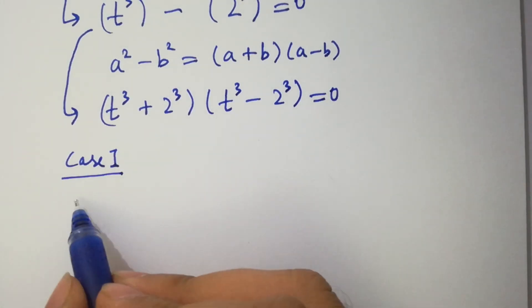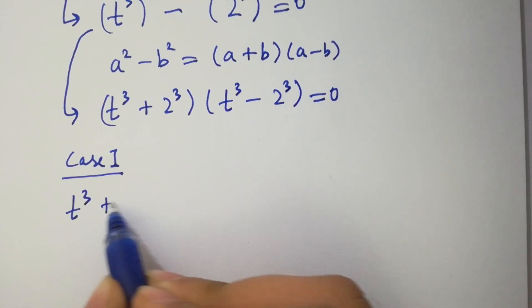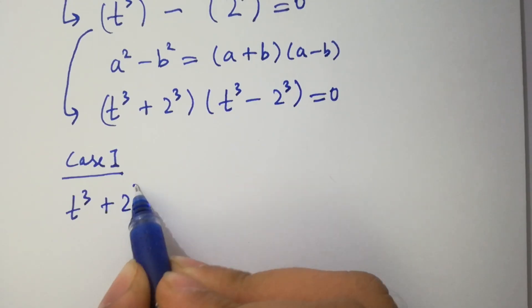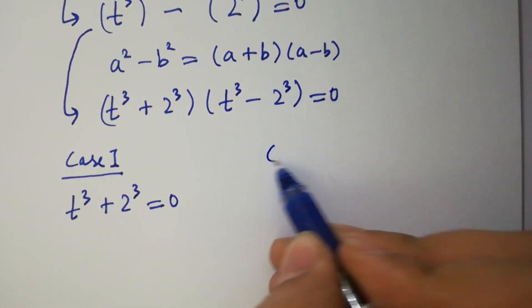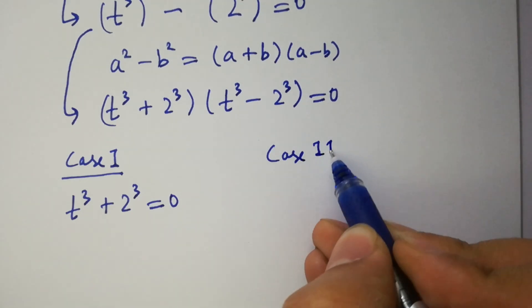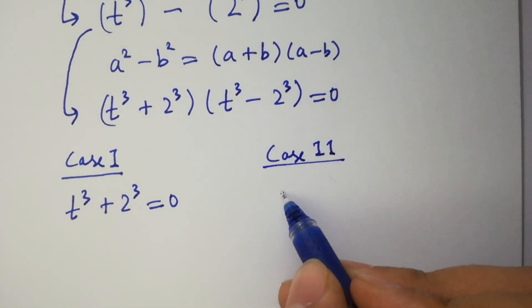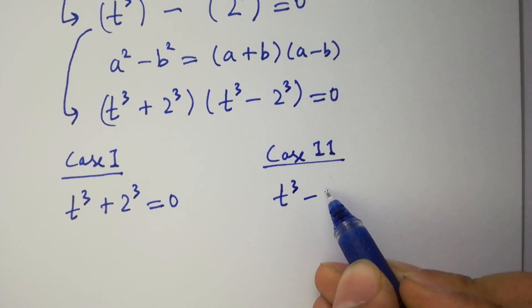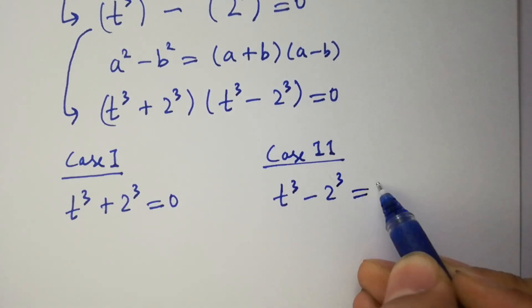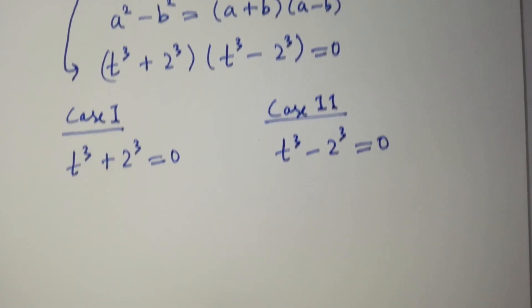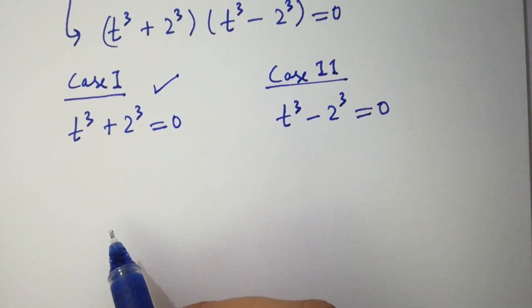Case 1: t cubed plus 2 cubed equals 0. And the second case is t cubed minus 2 cubed equals 0. First of all, I am going to solve Case 1.